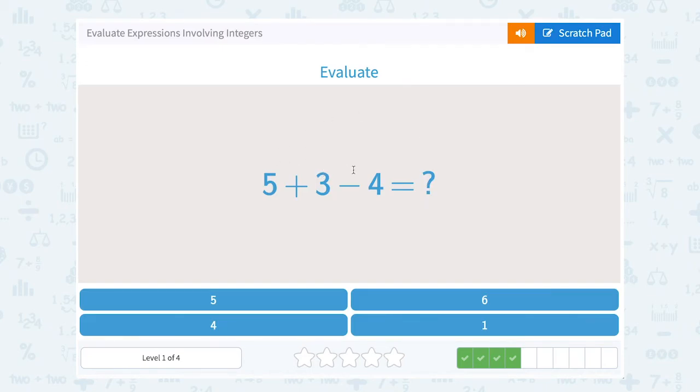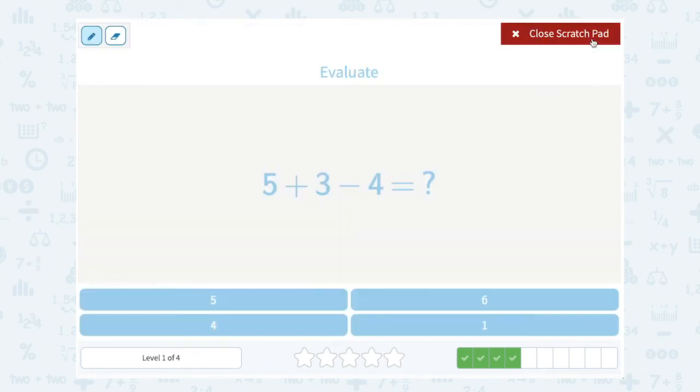5 plus 3 minus 4. Well, remember, addition and subtraction are the same level for order of operations, so you can just go left to right. 5 plus 3 is 8, and then I still have to subtract the 4, and 8 minus 4 gives me 4.